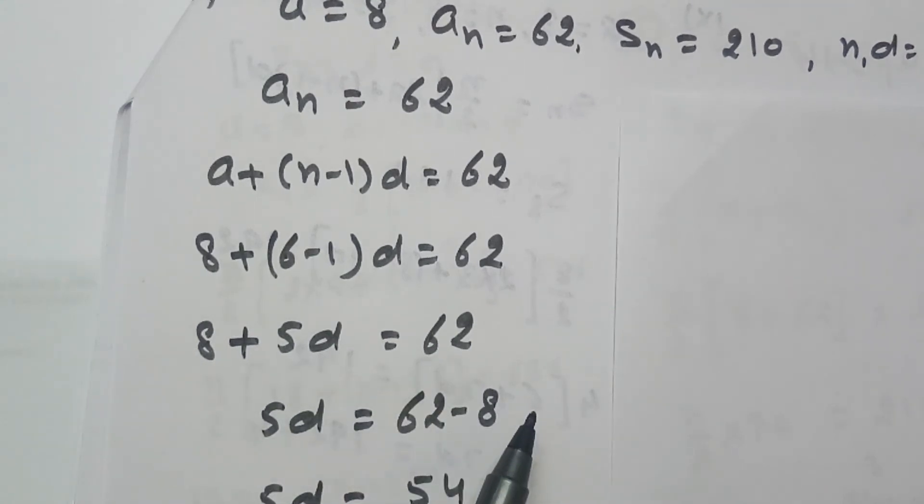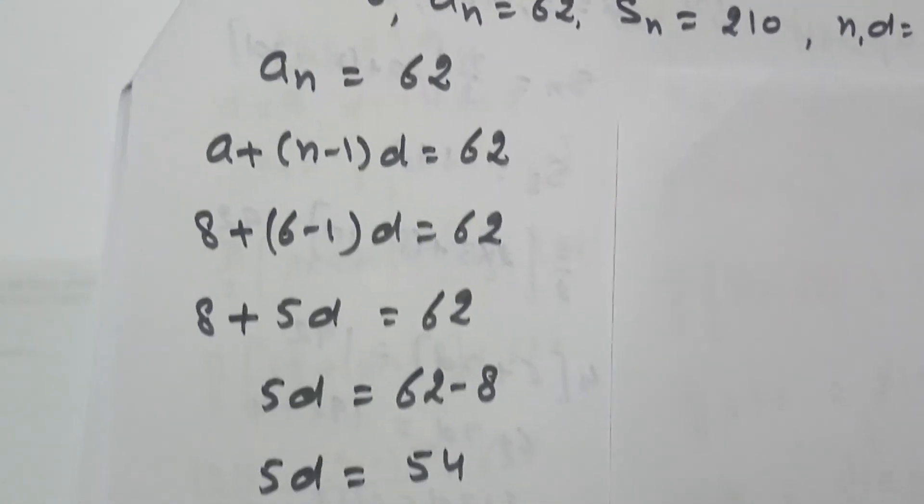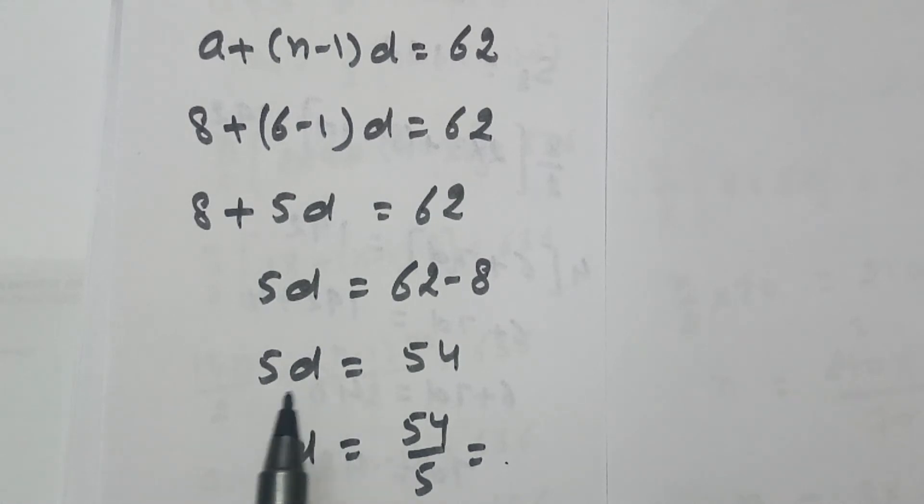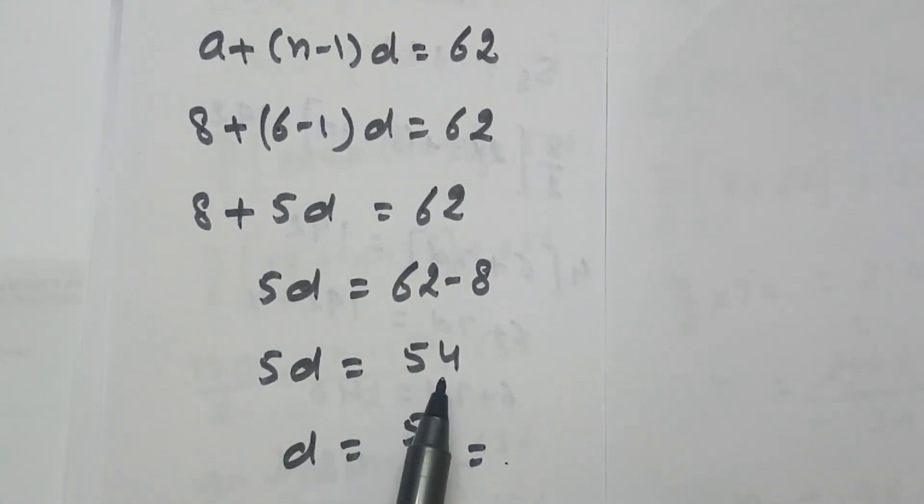This 8 will go to that side, it will subtract there. So now we are getting 5D equals to 54 and D equals to 54 over 5. So this is the value of D, common difference in this AP.